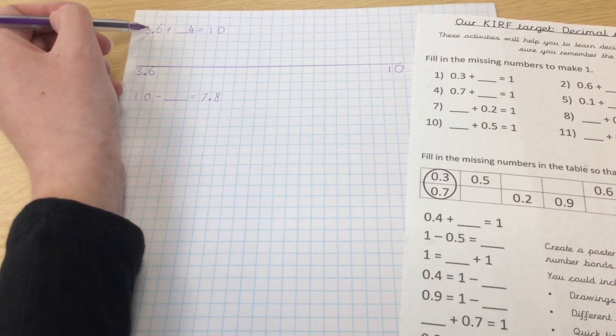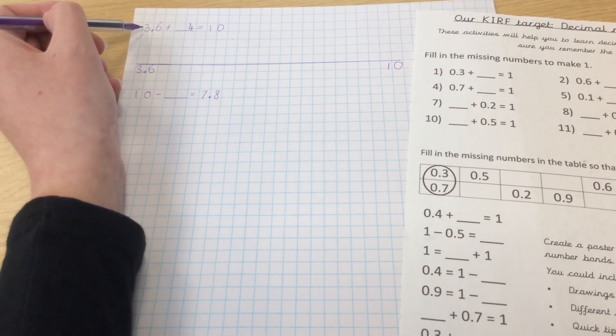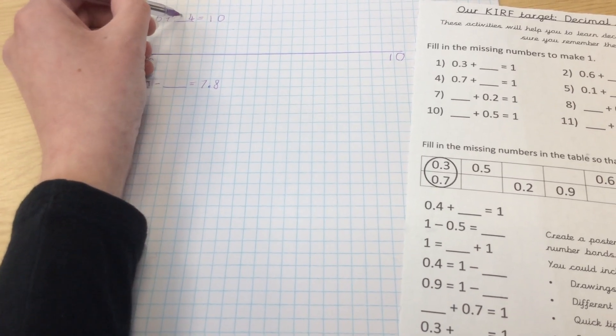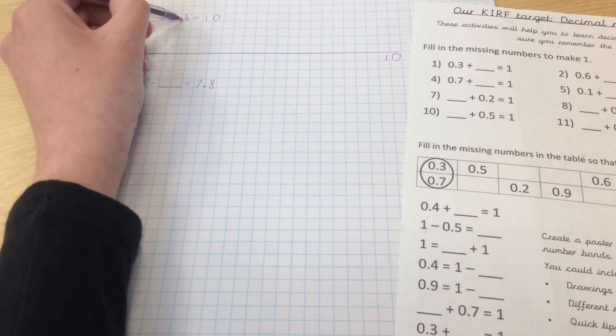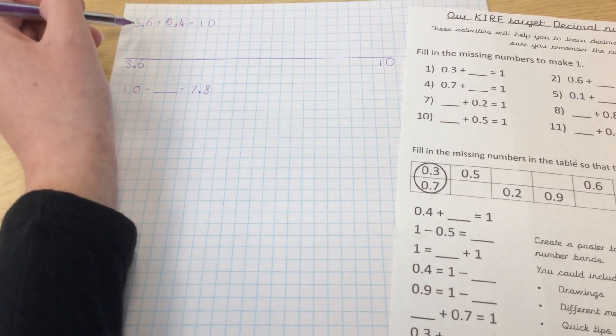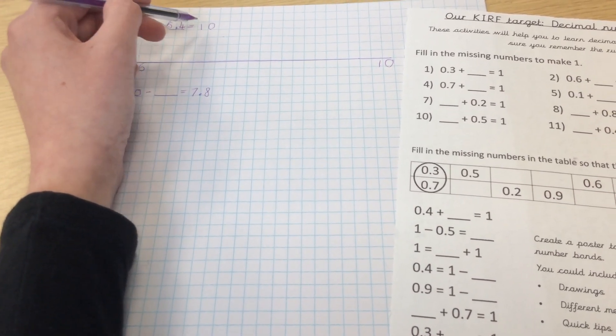And then in your tens column you are going to try and get to 9, so what are you going to need to get from 3 to 9? It will be 6. So your answer is 6.4, so you've got 3.6 add 6.4 is 10.